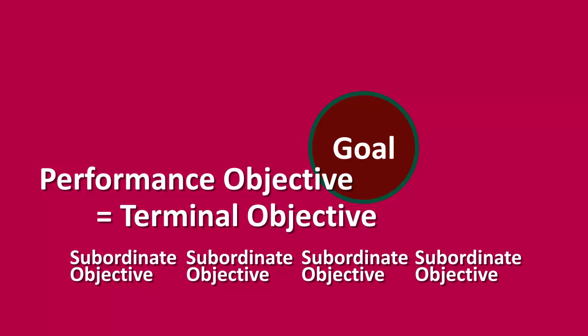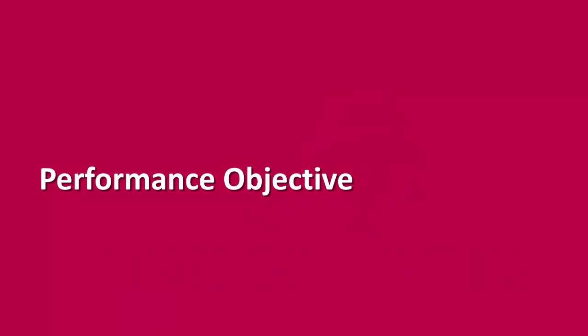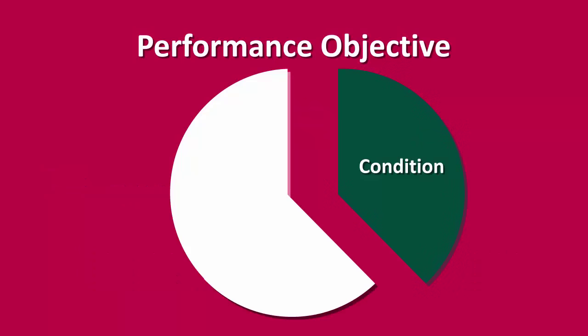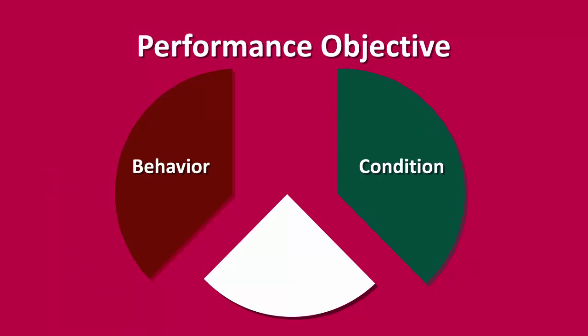What are the parts of a performance objective? There are three parts: a condition, a behavior, and criteria. These three parts should be present in any well-written performance objective.